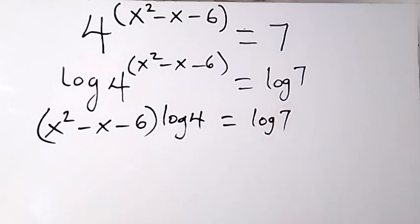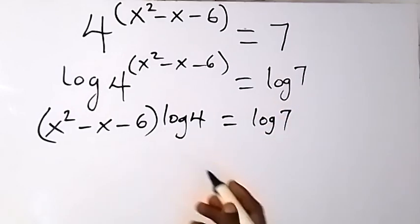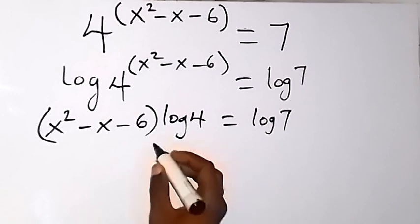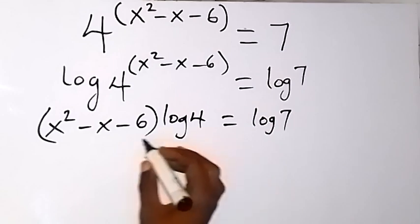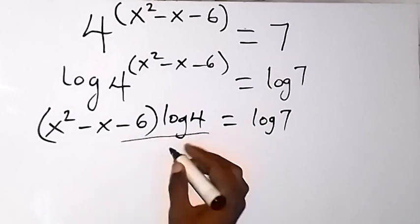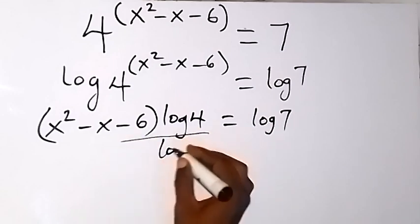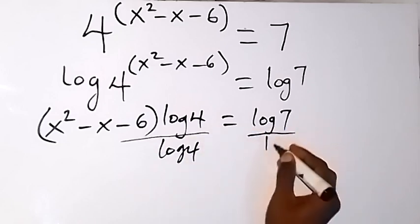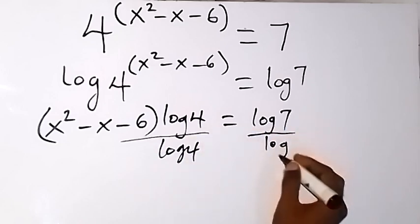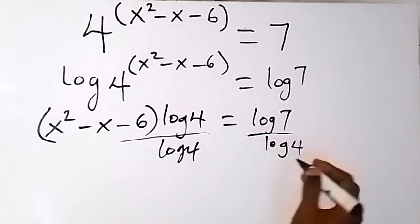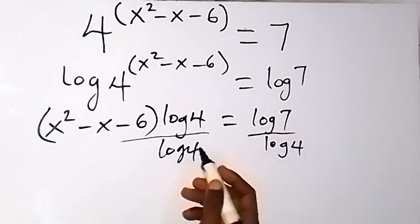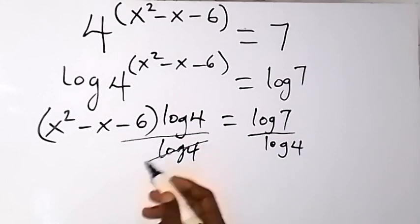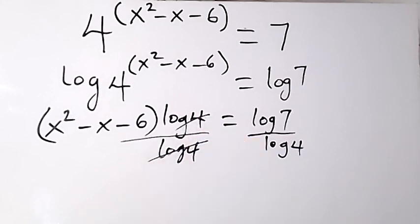From here we can divide both sides by log 4, so as to cancel log 4 on this side, and divide by log 4 on this side. Then log 4 will cancel log 4 here.